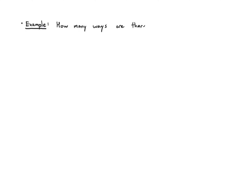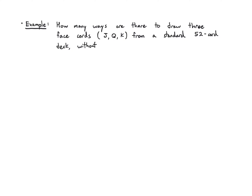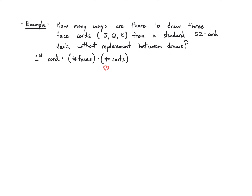Throughout this video, we'll focus on drawing from decks of cards because it's simple and intuitive. How many ways are there to draw three face cards — jack, queen, or king — from a standard 52-card deck without replacing the cards between draws? For the first card, the number of faces available is the number of faces times the number of suits. There are three faces (jack, queen, king) and four suits, so that's 3 times 4, giving us 12 options.